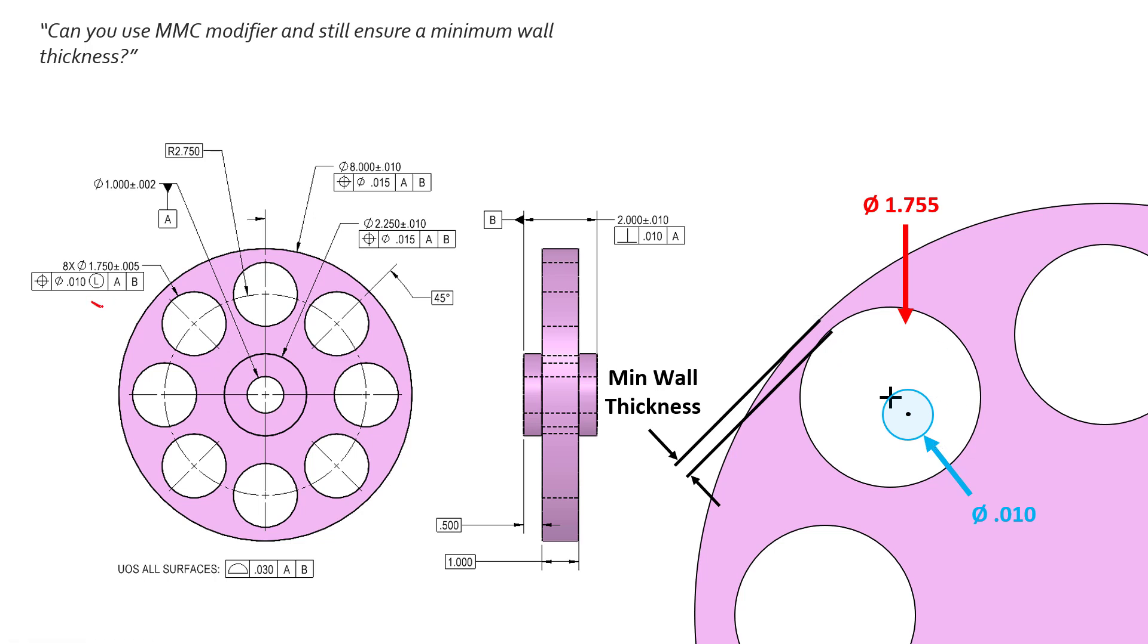Now that sets up this minimum wall thickness for this scenario. If we hold that minimum wall thickness with LMC again, if we drift back and we grow, or sorry, shrink the diameter down to the MMC size 1.745, we get 10 thousandths additional bonus. We get 10 thousandths bonus tolerance to add to the original 10 thousandths because we've deviated away from LMC by 10 thousandths.